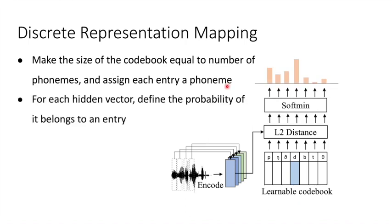Second, for each hidden vector, we define the probability it belongs to a code as follows. We first compute the distance between the hidden vector and each code. Then, a softmax operation is performed to convert distance into a probability distribution. The lower the distance, the higher the probability it gives.